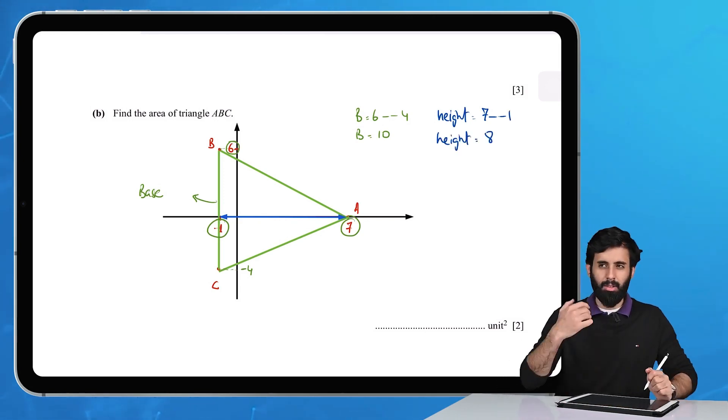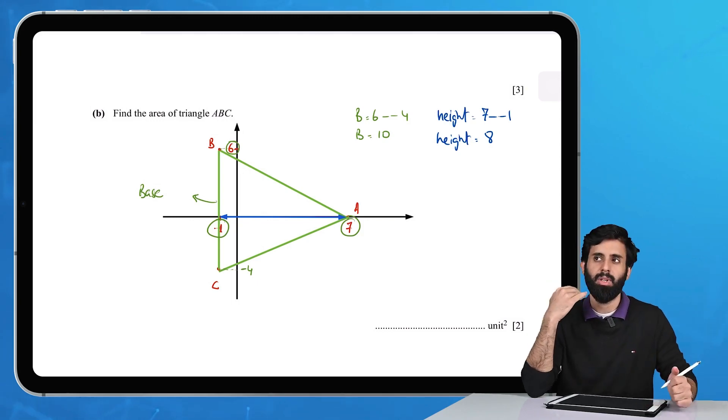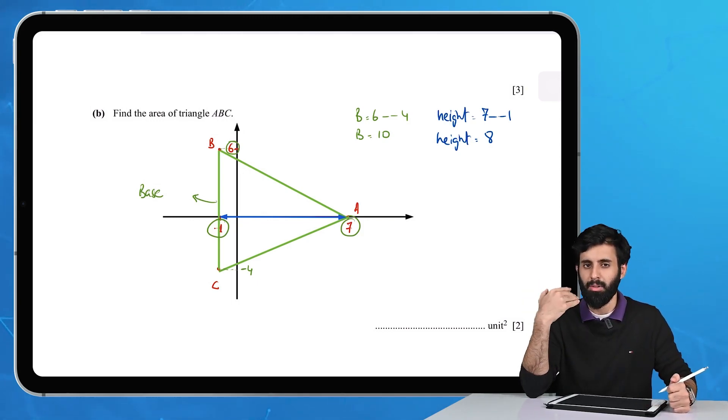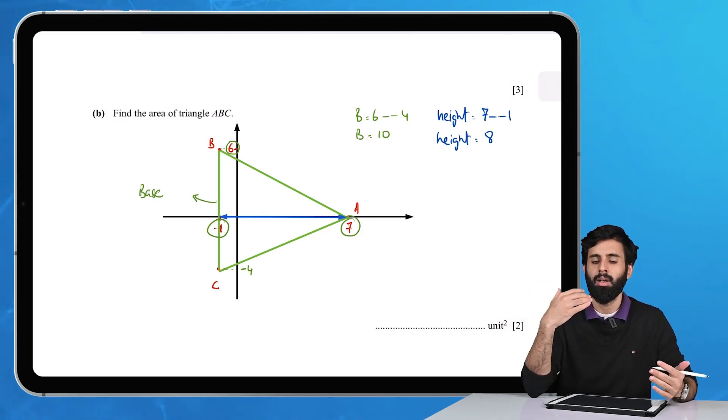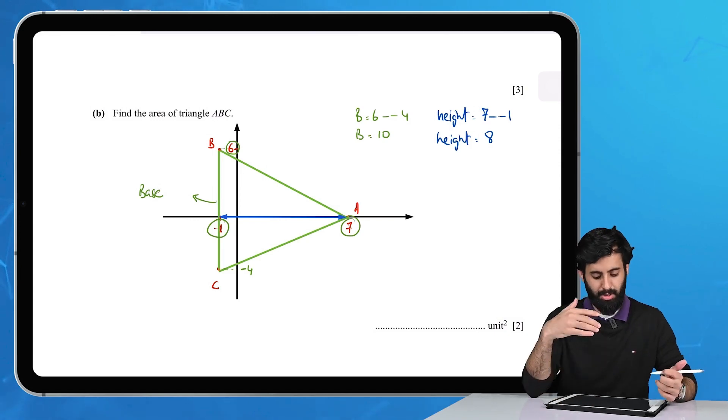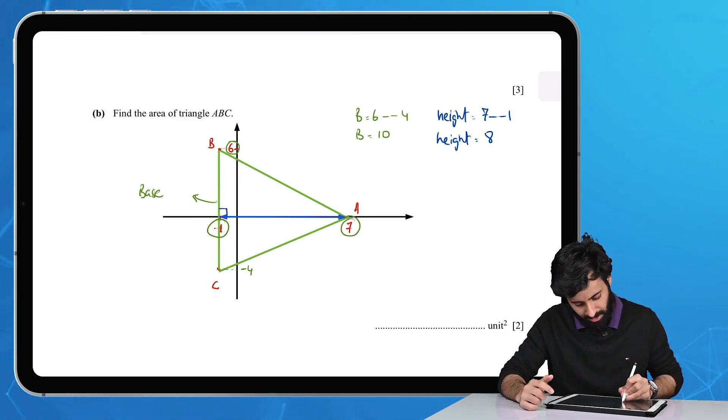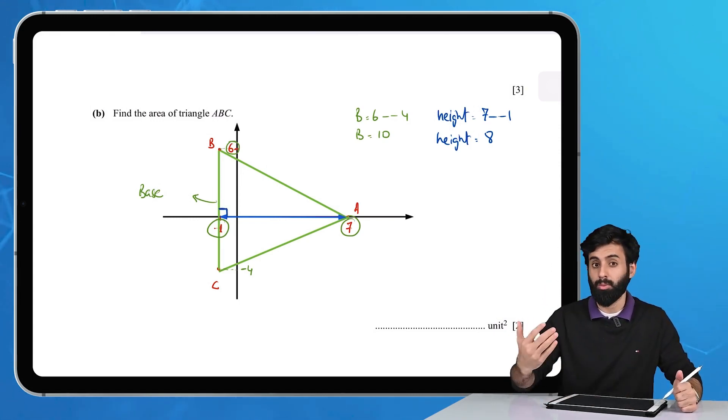It's not always that base will be horizontal and height will be vertical. These are relative terms. Height is the perpendicular distance, meaning at 90 degree angle from the base to the highest point.